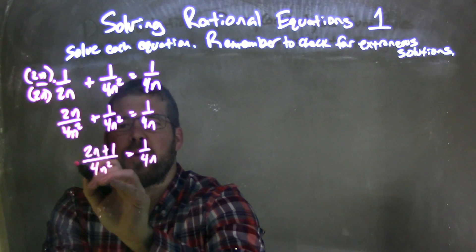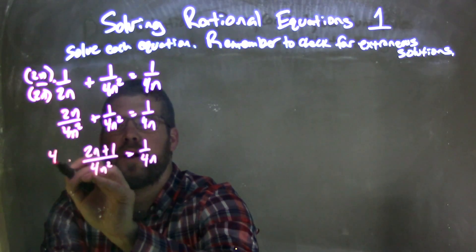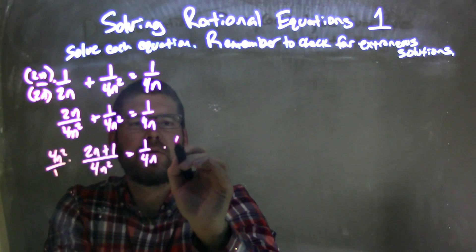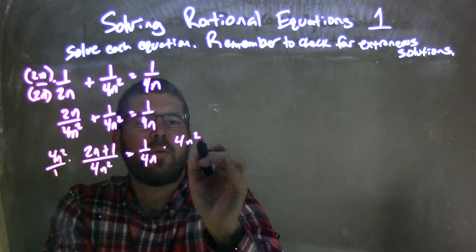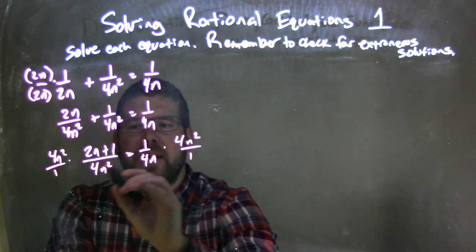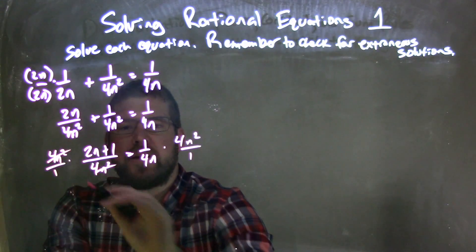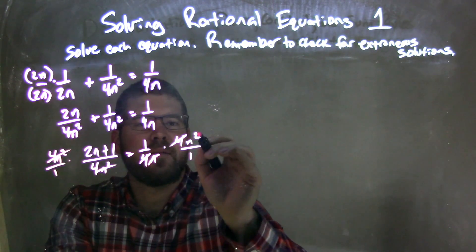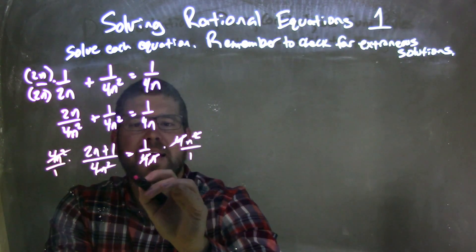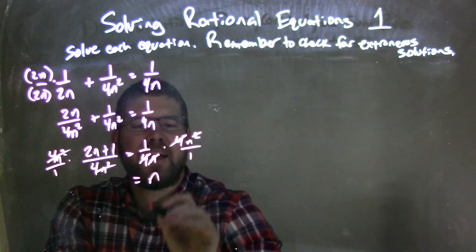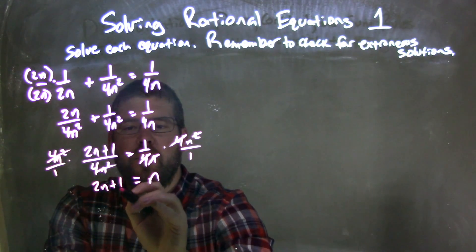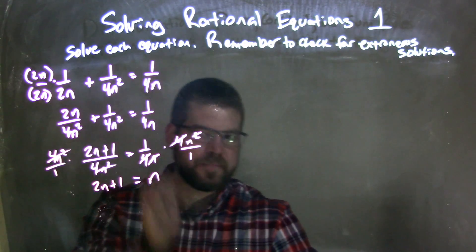Now I'm going to multiply both sides by 4n squared. What that will do is eliminate the 4n squared on the left, eliminate the 4s on the right, and the n gets eliminated with the squared, giving me just n on the right and 2n plus 1 on the left.